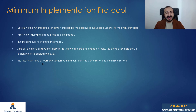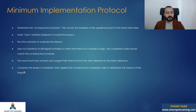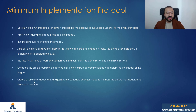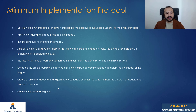The result must have at least one longest path that runs from start to finish. Compare the project completion date you have just achieved against the unimpacted completion date to determine the impact of the fragment. Then we can create a table that documents and justifies any schedule changes made to the baseline before the impacted as-planned is created. We quantify net delays and gains.